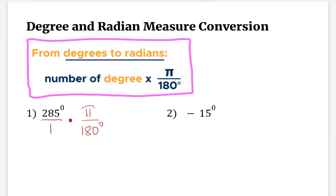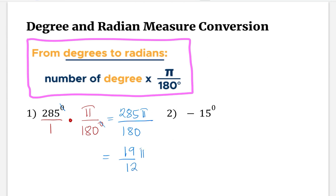With this, we can cancel the degree on the numerator and the denominator, then multiply straight across, which will be 285 pi over 180. And then we are going to simplify this — 285 divided by 180 — that should be equal to 19 over 12 pi radians.